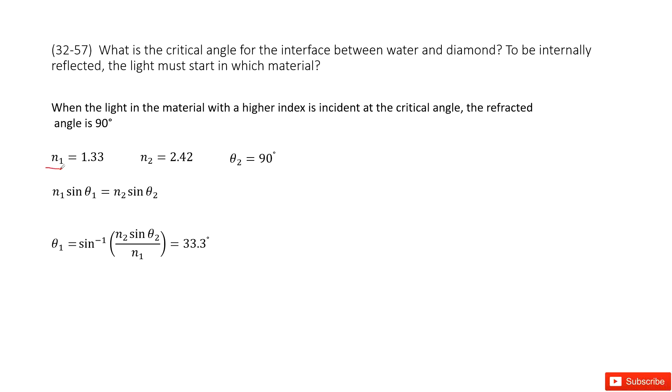We check our textbook and find the index for water and the index for diamond. We also know this is internal reflection, which means theta 2 is 90 degrees.